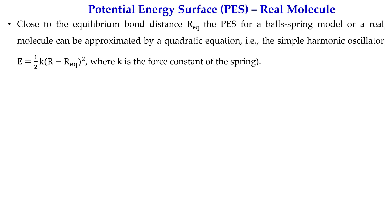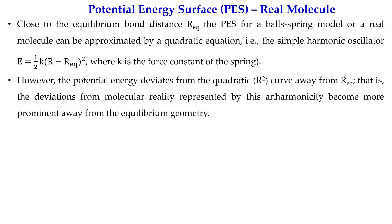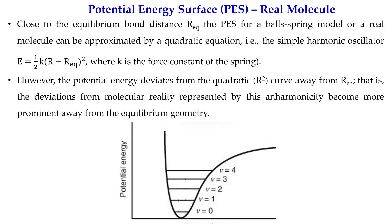One more point: close to the equilibrium bond distance we only consider the quadratic equations, which provide a parabolic plot of energy versus bond length. But for a real molecule, when we deviate from the equilibrium bond distance, we lose the quadratic behavior. That deviation from molecular reality is represented by anharmonicity, which becomes more prominent away from the equilibrium geometry. So the real plot shows that as the bond length increases further from equilibrium, we lose the harmonic parabolic plot and we get anharmonic behavior.